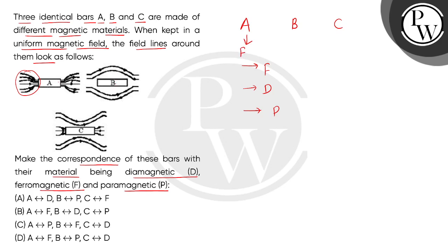Now children, if we check material B, then the magnetic lines are not going inside of material B. It means material B is going to repel the magnetic lines. And which material will repel? That is the diamagnetic.